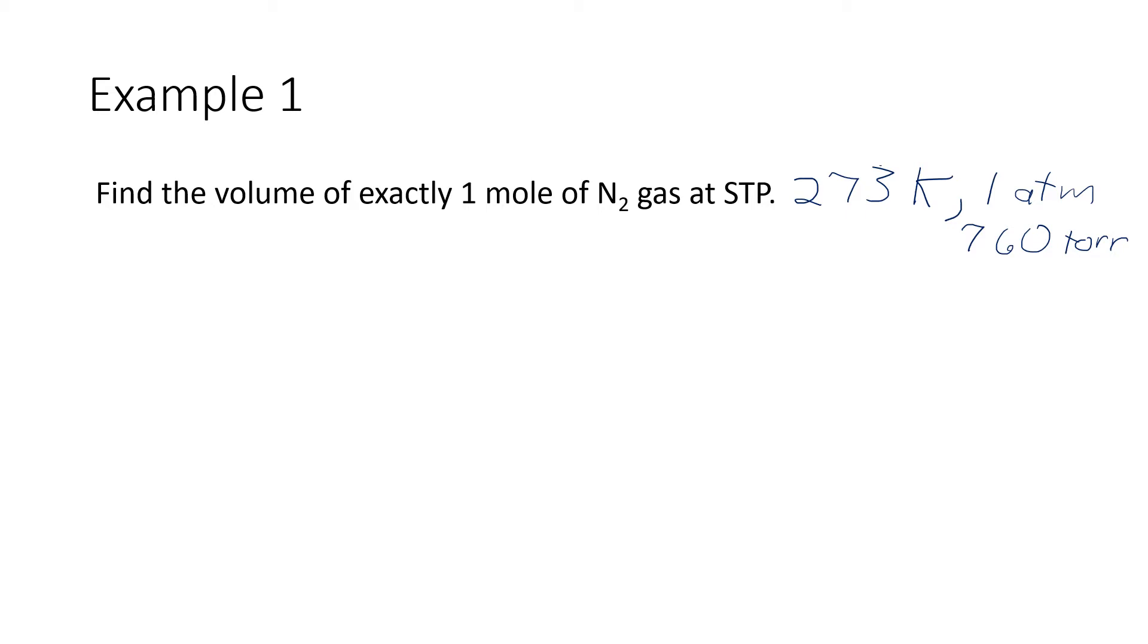And our pressure is either one atmosphere or 760 Torr because those two are equivalent to one another. So let's see if we can look at our given, our unknown, and our equation. Well, it looks like we have one number for everything. We are given one amount of gas, which is one mole. We are given one temperature, which is 273 Kelvin. And we are given one pressure. I just expressed that one pressure in two equivalent units.